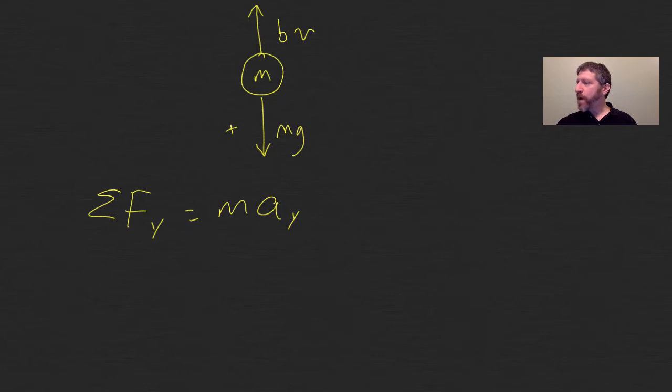The force in the y direction is mg, which is positive, I've made down positive, minus bv equals m a. And unlike the specific situation of terminal velocity, I don't have acceleration zero here anymore. It is going to be accelerating until it reaches terminal velocity. I've dropped the y subscripts because we're only going to be moving in the y direction here, only accelerating that way.